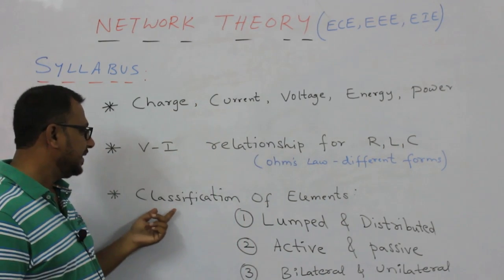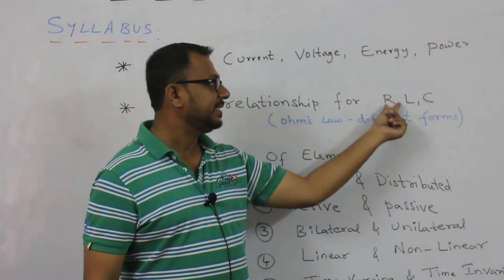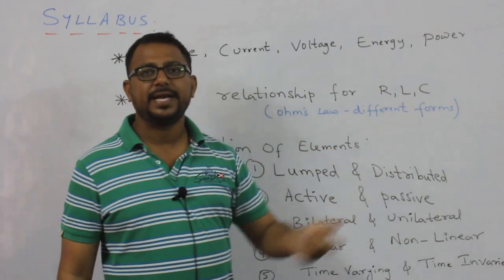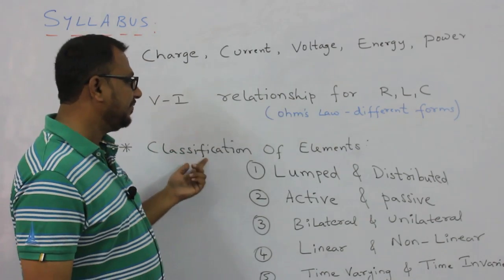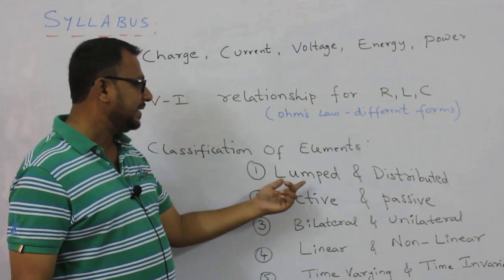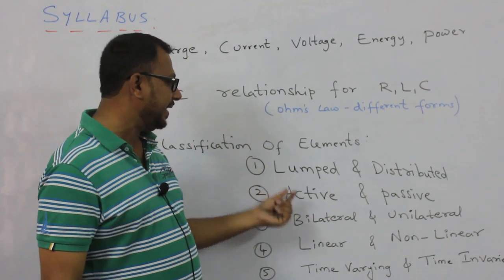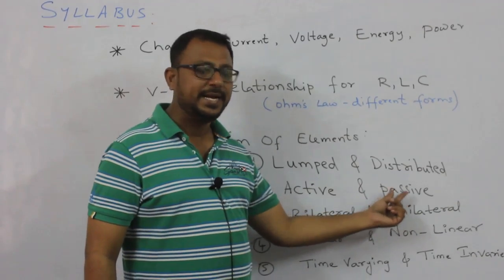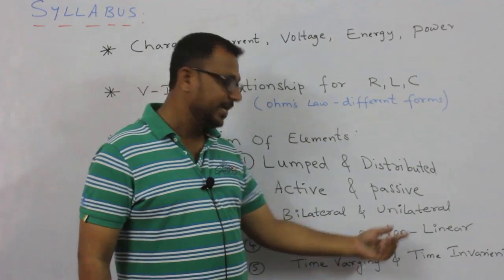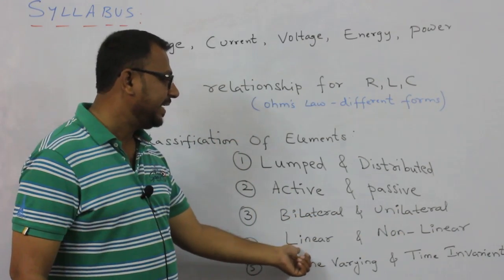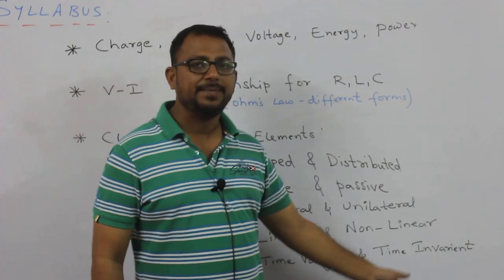The next topic we are going to study is classification of elements. When we talk about any element — for example, a resistor, inductor, capacitor, diode, or transistor — we can classify it as a lumped or distributed element, active or passive element, bilateral or unilateral element, linear or nonlinear element, and time varying or time invariant.